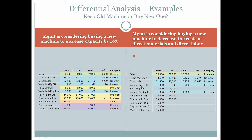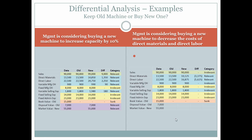Variable manufacturing overhead would be considered irrelevant because it is not going to change, and variable selling expenses would also be irrelevant because they are not expected to change. Fixed manufacturing overhead as well as selling and administrative expenses are not expected to change, so in either scenario these same costs will be incurred and would be considered irrelevant. The book value of the old machine is sunk in either scenario.